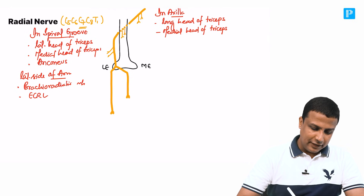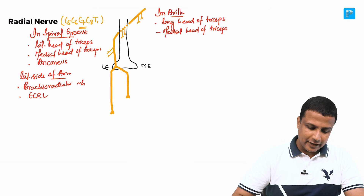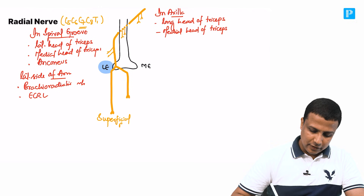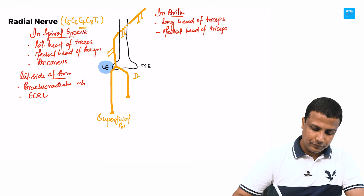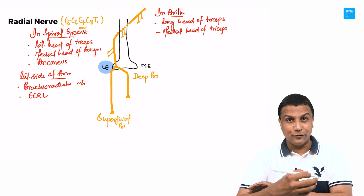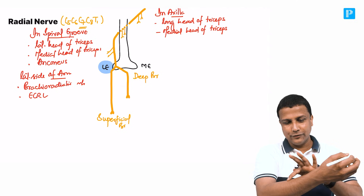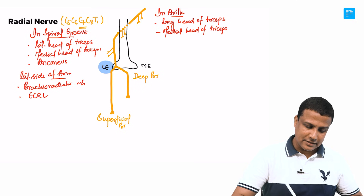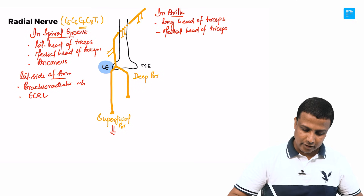Right in front of the lateral epicondyle, the radial nerve divides into the superficial branch and the deep branch. The superficial branch runs superficially and supplies the skin on the dorsum of the hand.